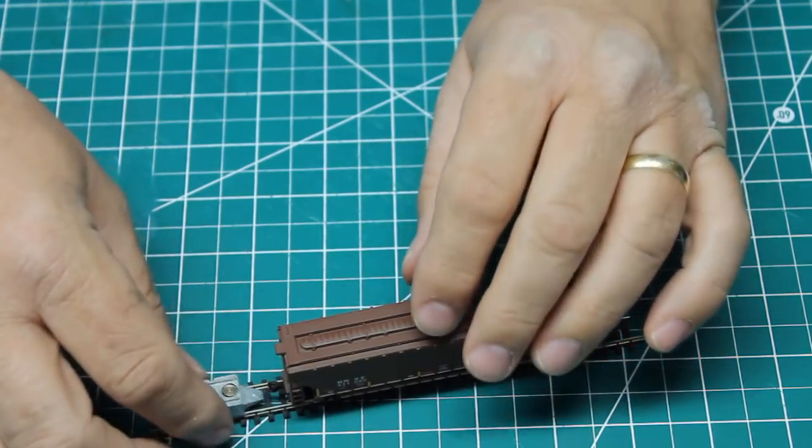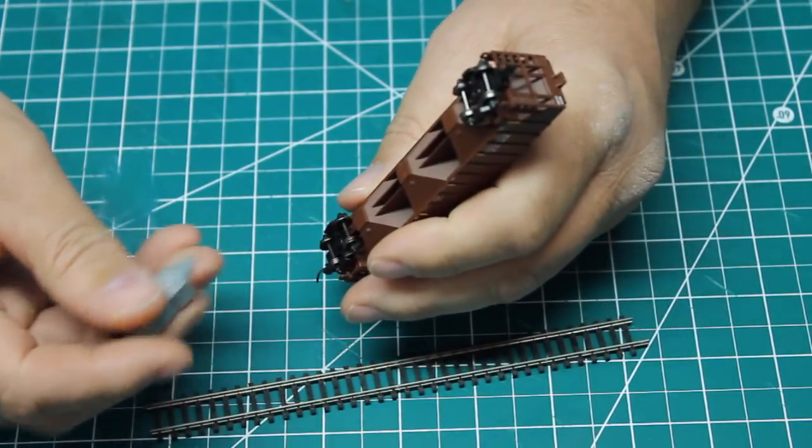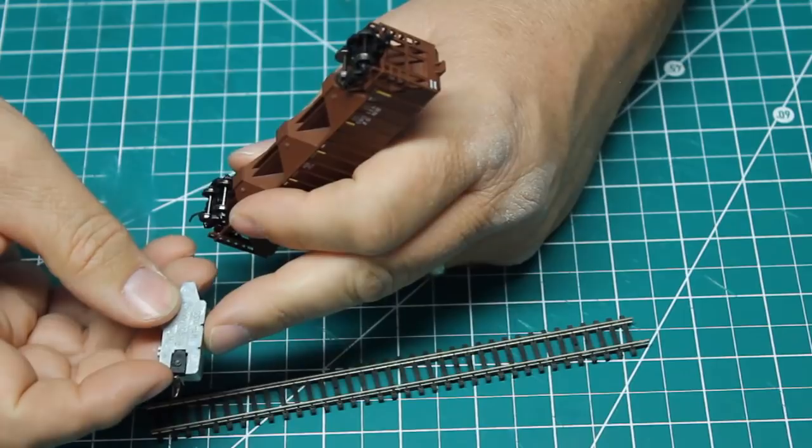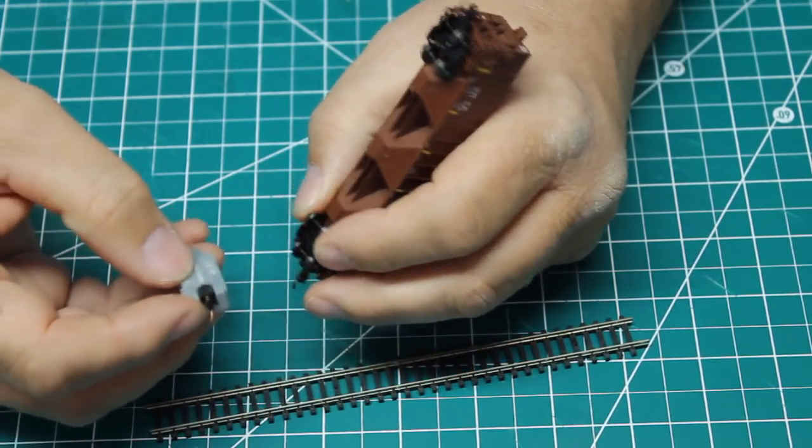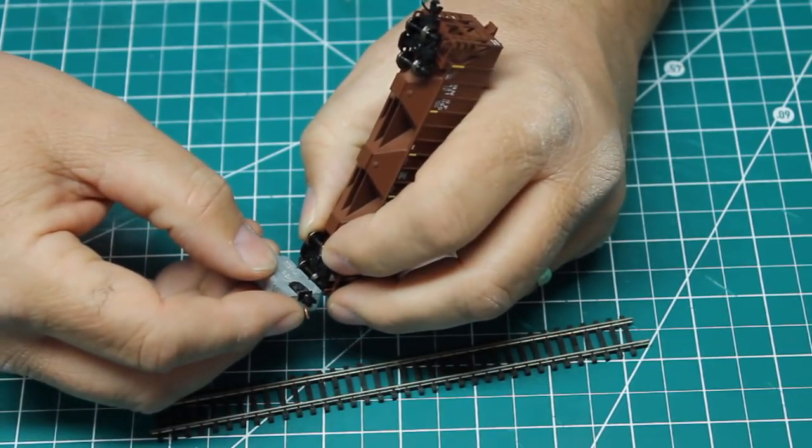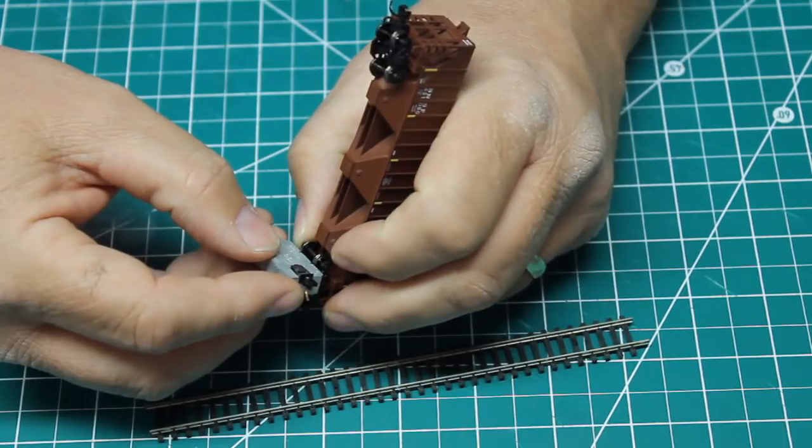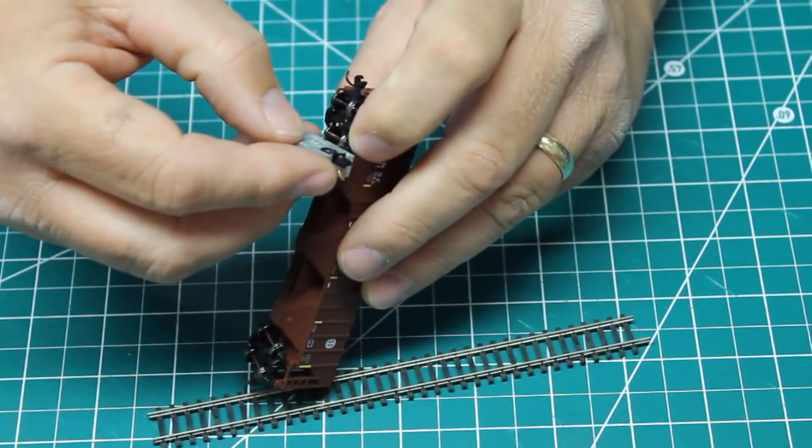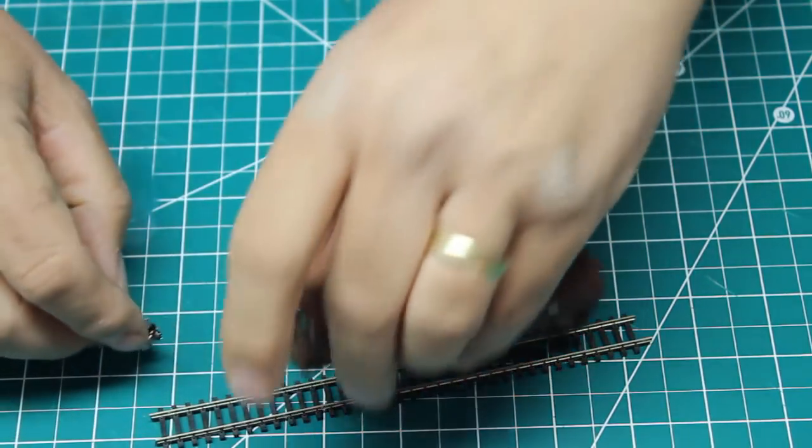One other thing that you can do with this gauge is you can test the gauge of the wheels. It has these two little notches here now again NMRA gauges work for this also perfectly well but the Microtrains gauge has the notches as well and you can just test the gauge of the flanges to make sure they're going to fit just exactly the way they should on the rails and these wheels all seem to be just perfectly engaged.